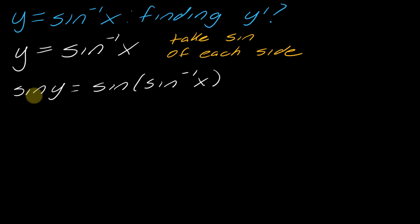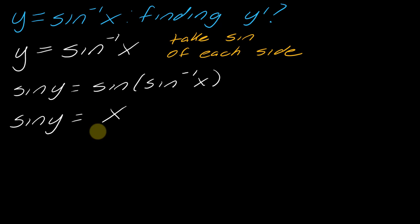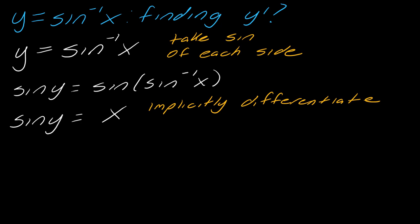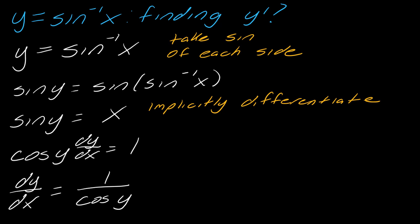I take sine of y and sine of inverse sine of x. Whenever a function is composed with its inverse, there's a property that says this will just equal x — so we're just left with x on the right side. In doing this, I've created something I can take the derivative of; I just have to do so implicitly. So if I take the derivative of sine y, that gives me cosine y times dy/dx, and on the other side the derivative of x is just one. I can then solve for dy/dx and get one over cosine of y.